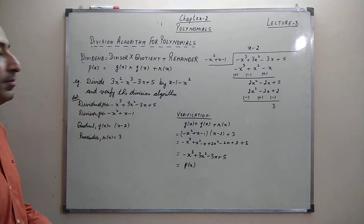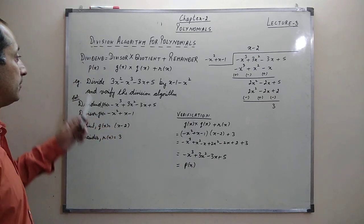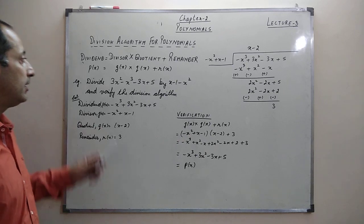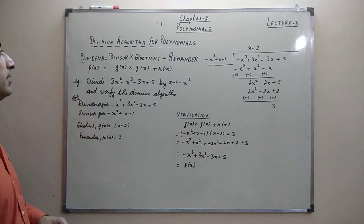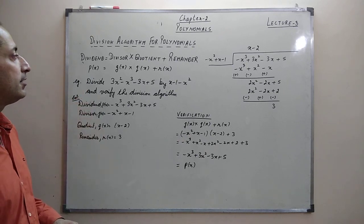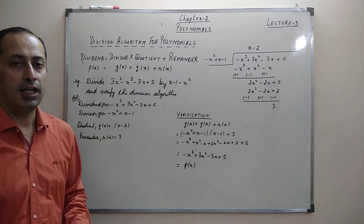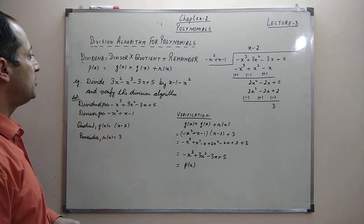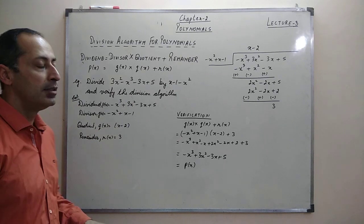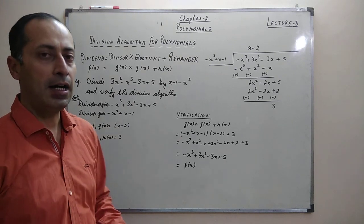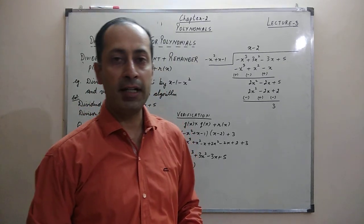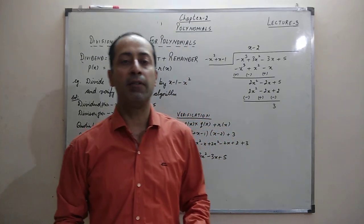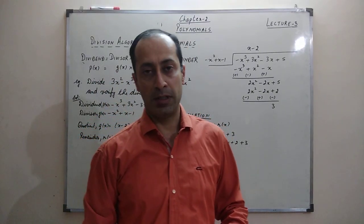The division algorithm states that dividend equals divisor into quotient plus remainder. Using symbols: dividend is p(x), divisor is g(x), quotient is q(x), and remainder is r(x). So we have the relation p(x) = g(x)·q(x) + r(x). Let's verify this relation and understand how to divide polynomials using the division method.